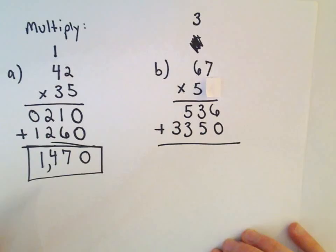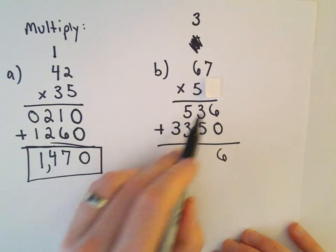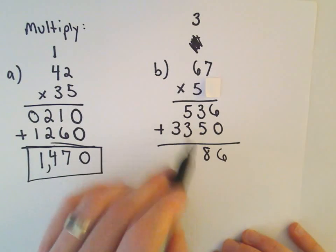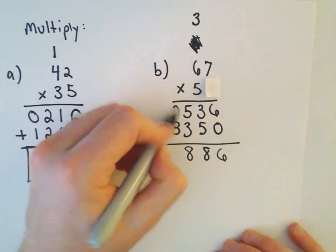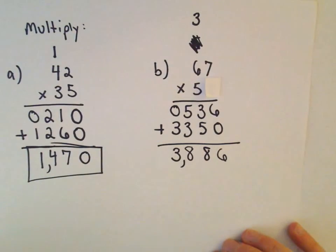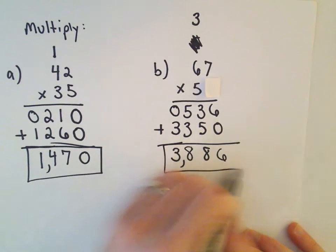And again, we just do our addition. So 6 plus 0 is 6. 3 plus 5 is 8. Well, 5 plus 3 is 8. And then 0 plus 3 is 3. So it says if we multiply, we'll get 3,886 as our answer.